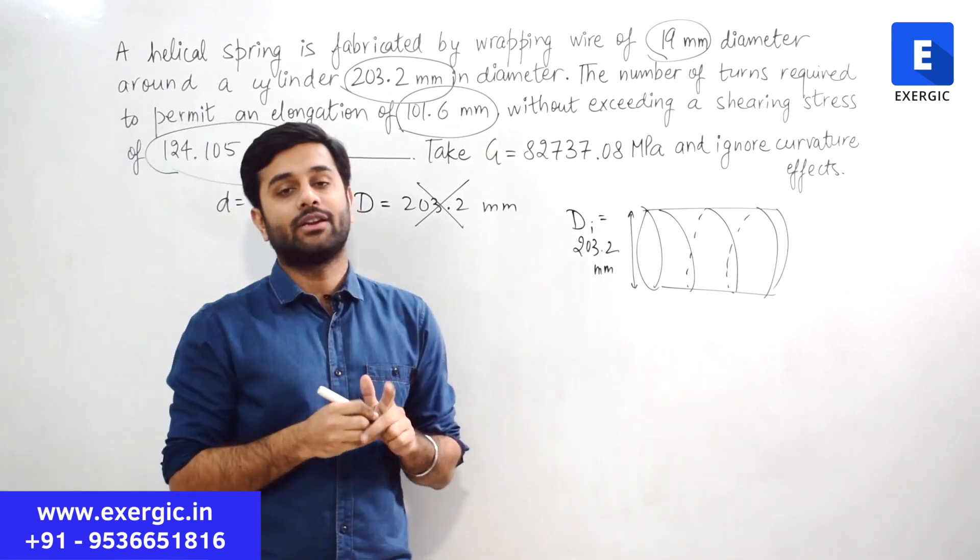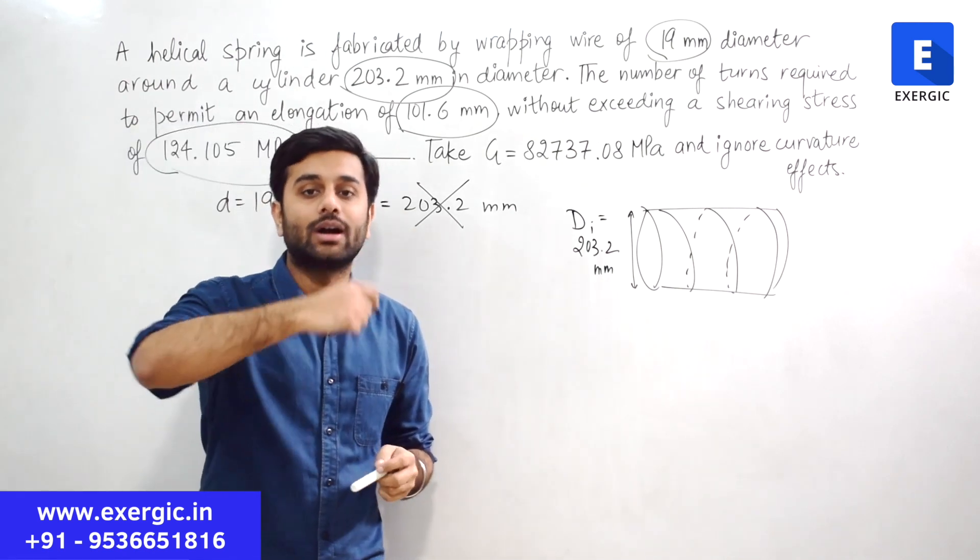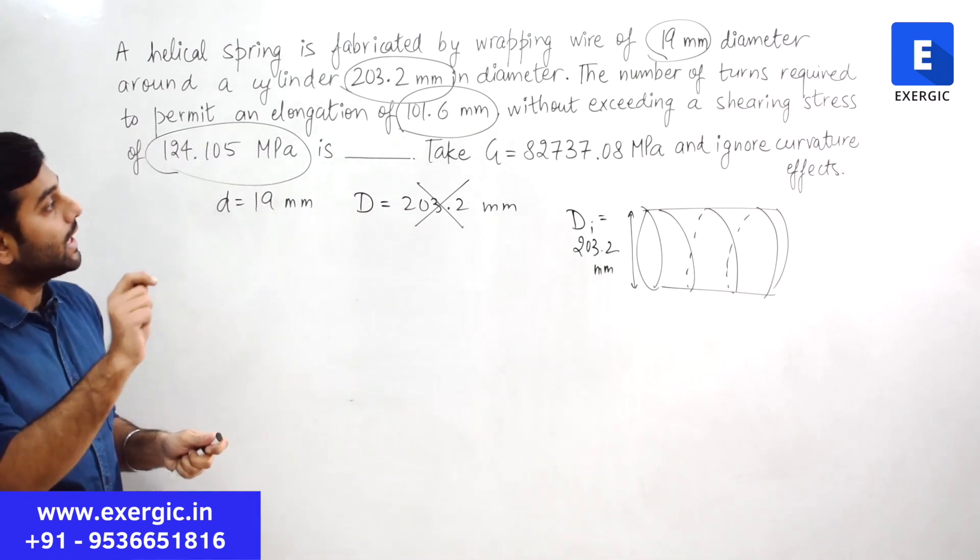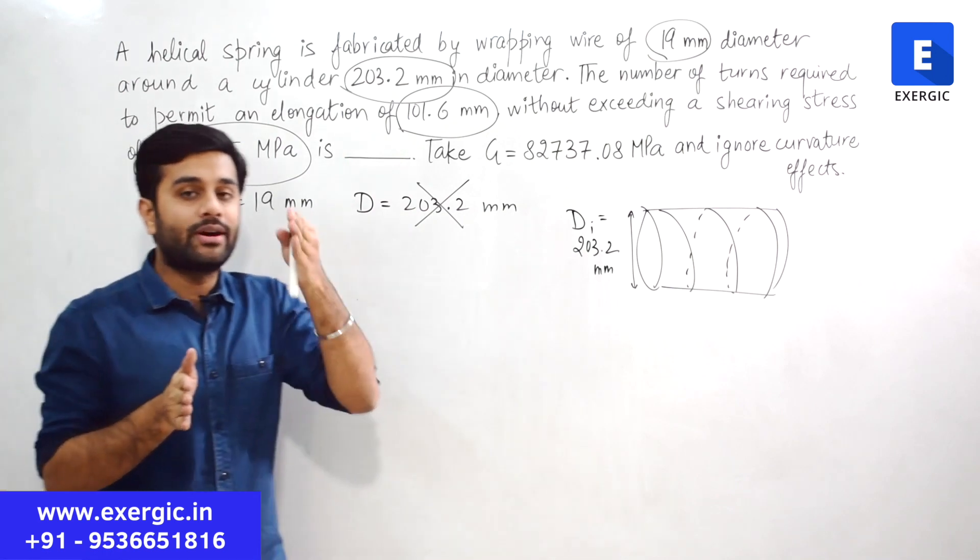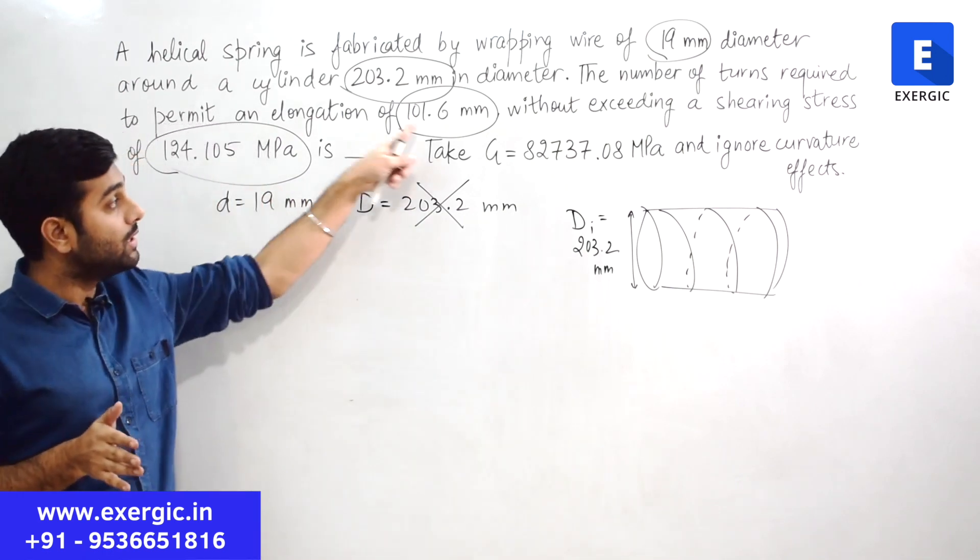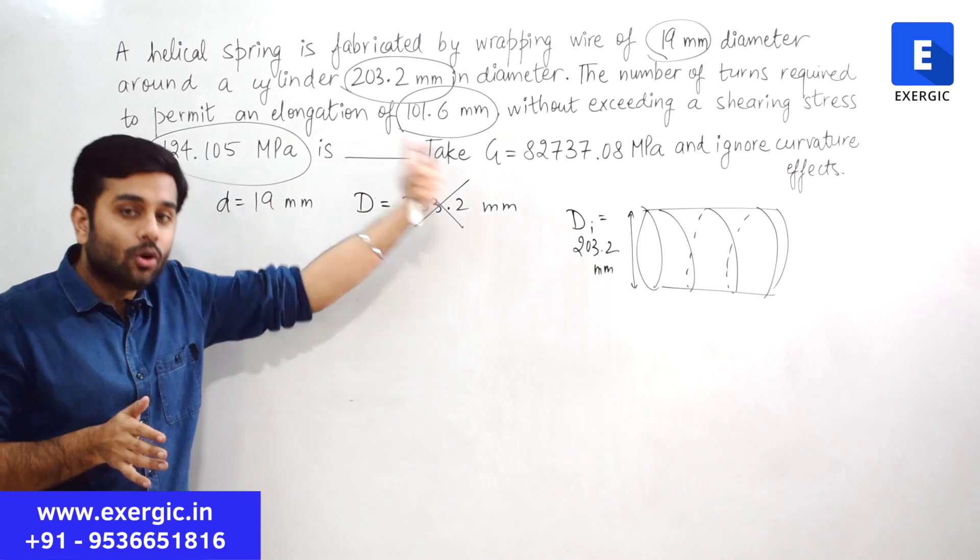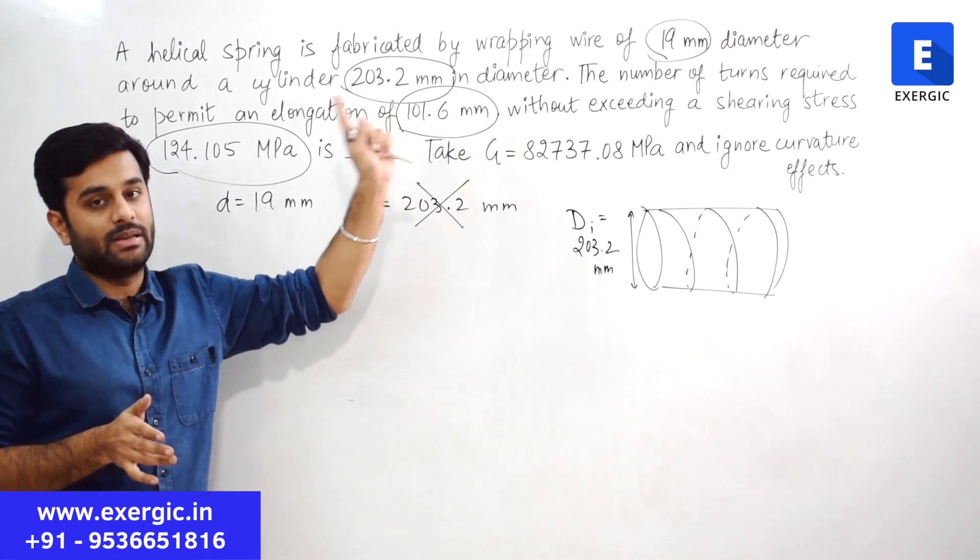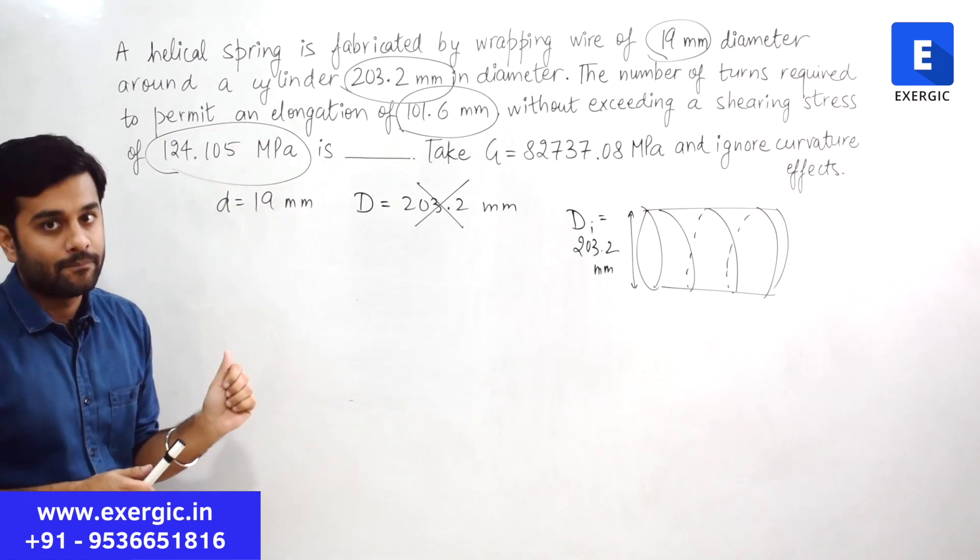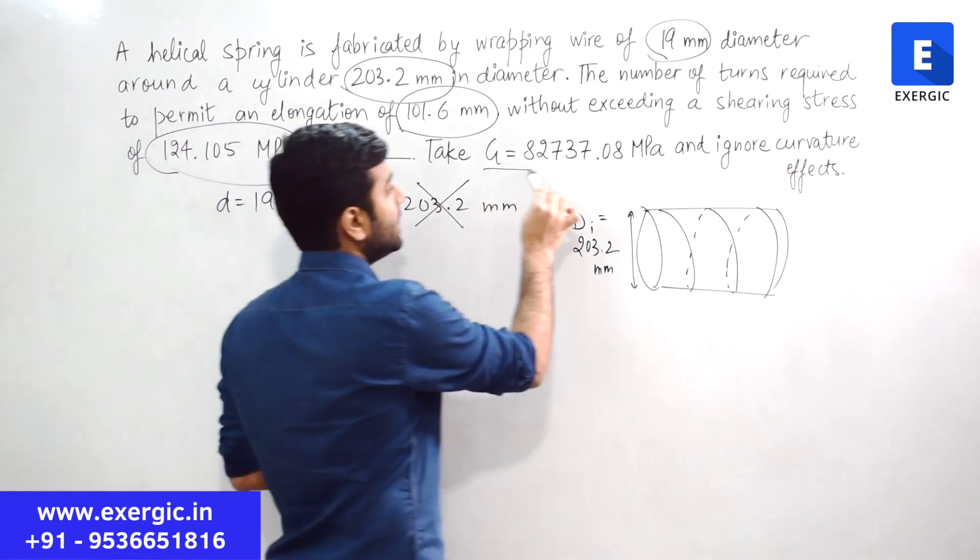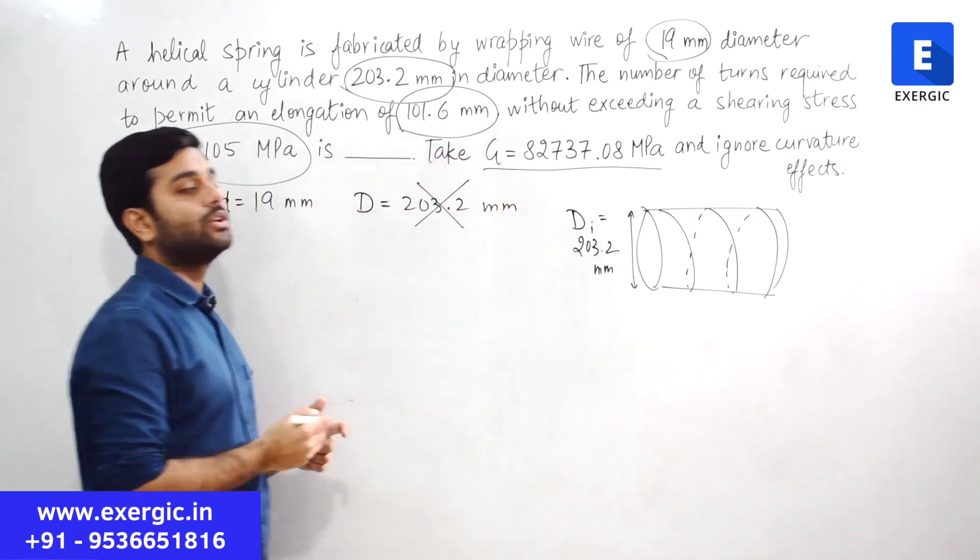Obviously without exceeding a shear stress of this mega Pascal is how much. So it is basically asking you how many turns you have to give in the cylinder so that the elongation is restricted to 101.6 mm. Also, the stress criteria is mentioned that shear stress should not cross this much mega Pascal. Value of G is given to you and it is asking you to ignore curvature effect.